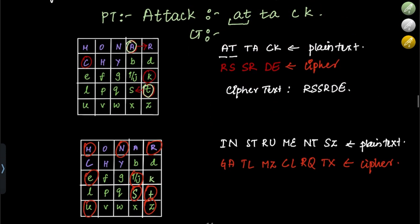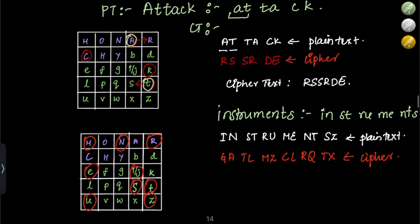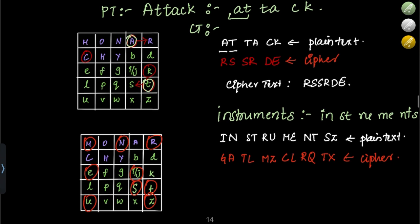Let us look at another plain text: INSTRUMENTS. Writing it in pairs: IN, ST, RU, ME, NT, and then S is left alone, so we add a dummy filler letter Z to make the pair SZ.